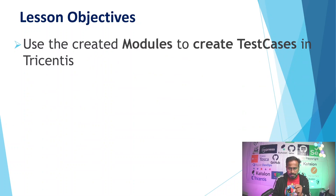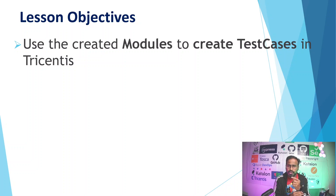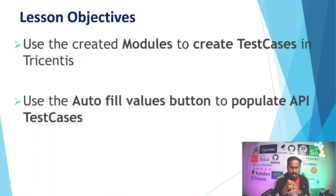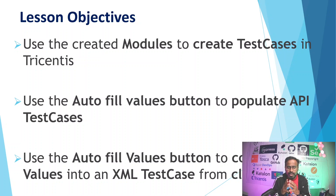Lesson objectives: First, we are going to use the created modules from our earlier session to create test cases in Tricentis Tosca. Then we are going to use the autofill values button to populate API test cases, and use the autofill values button to copy default values into an XML test case from clipboard.